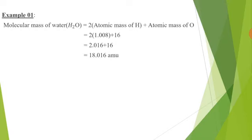We can calculate the molecular mass of water. The molecule of water contains two atoms of hydrogen and one atom of oxygen. First multiply the atomic mass of hydrogen 1.008 and oxygen 16 with the number of atoms of hydrogen and oxygen, and then add the masses. So we get the molecular mass of water, that is 18.016 amu.